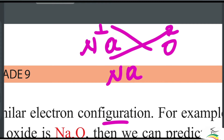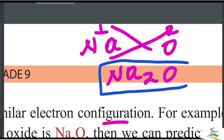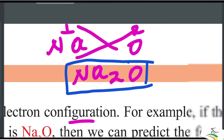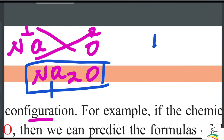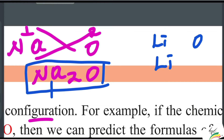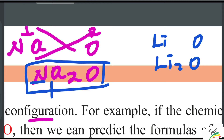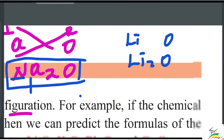Na₂O — sodium oxide — has the formula Na₂O. It is a sodium group compound. Sodium and oxygen, or lithium and oxygen, share the same group. They both belong to the group of lithium, sodium, and potassium — the alkali metals — giving them the same formula pattern as Na₂O.